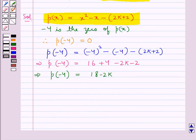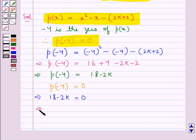Now, the condition for -4 to be a zero of p(x) is p(-4) = 0. Thus, 18 - 2k = 0, which gives us 2k = 18.